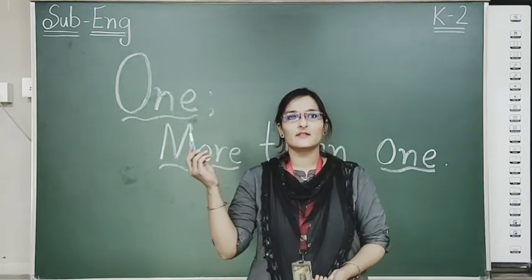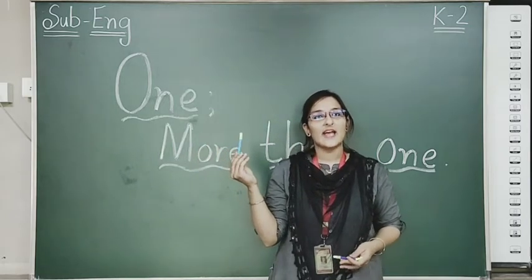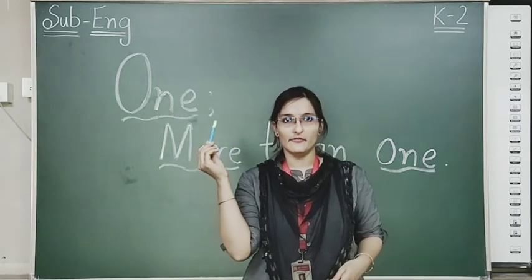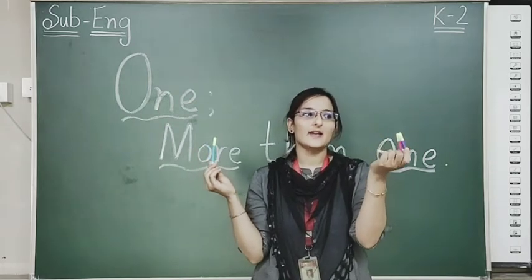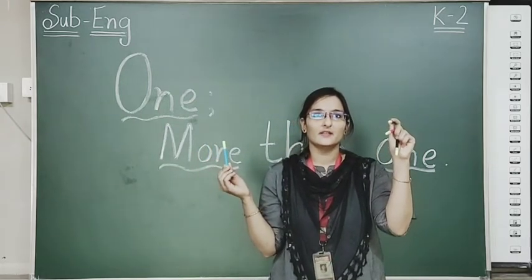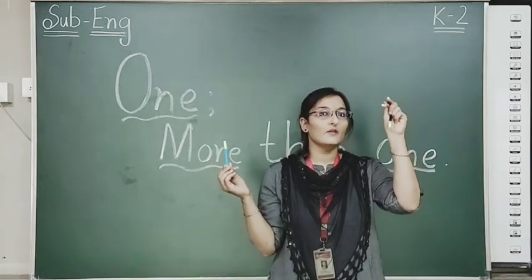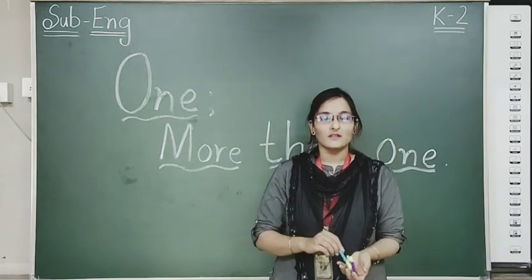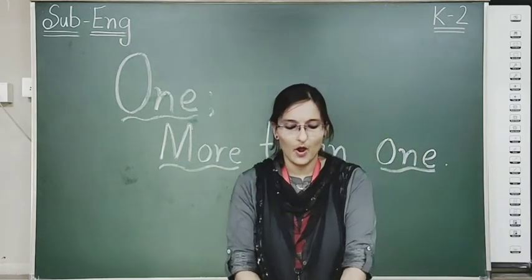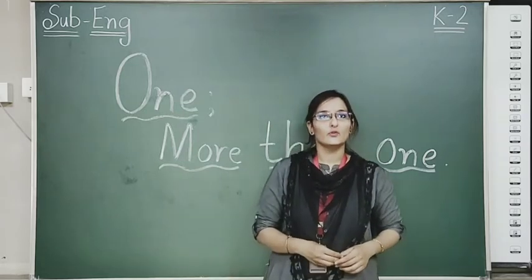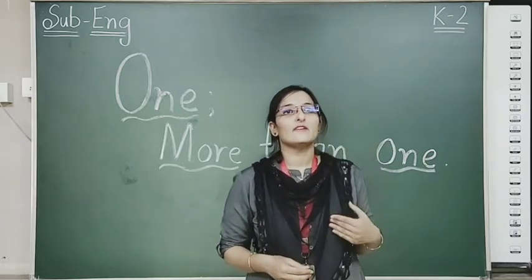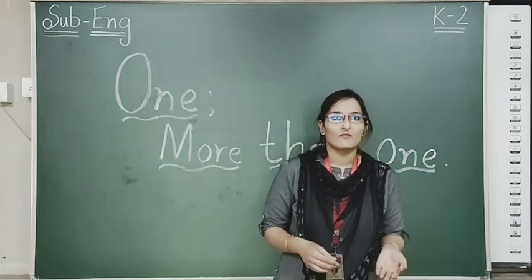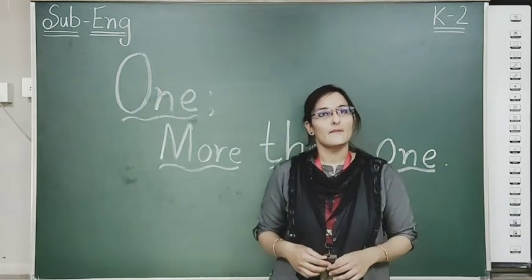What is this? Sketch pen. How many? Only one. And in this hand, how many sketch pens are there? One, two, three — three. When we are talking about more than one, we have to add S. So the spelling will change. Here we will say sketch pens.